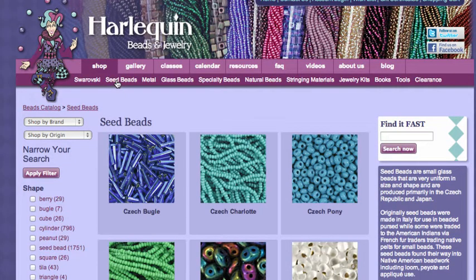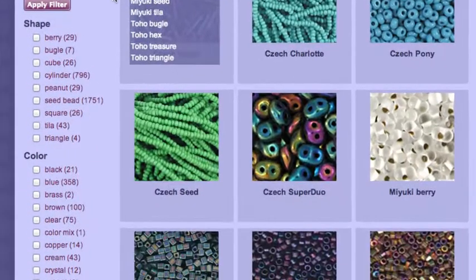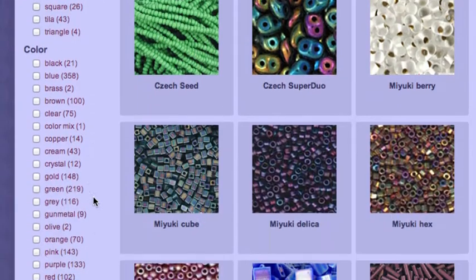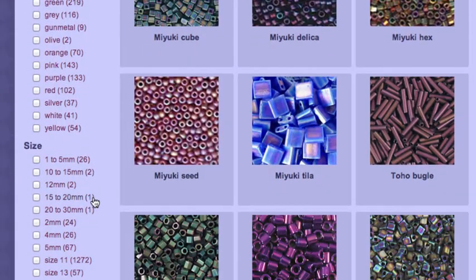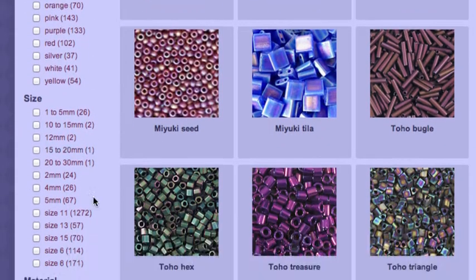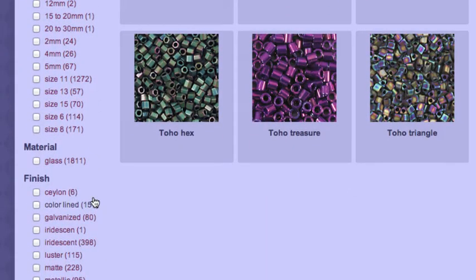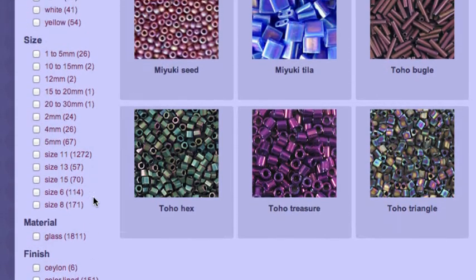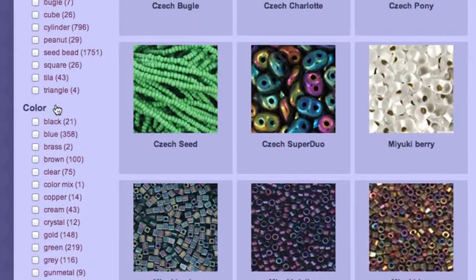Now that I'm in the seed bead category, I can narrow down the results to find exactly what I'm looking for. I can search by shape, color, size, material, and finish all at the same time. I'm looking for blue seed beads, so I will check those boxes.